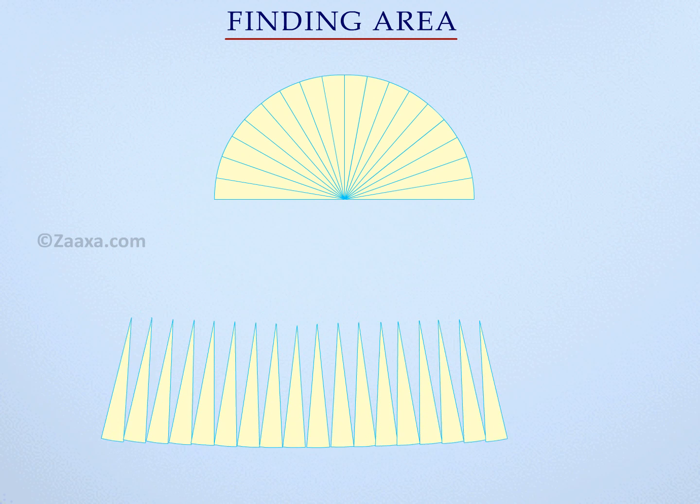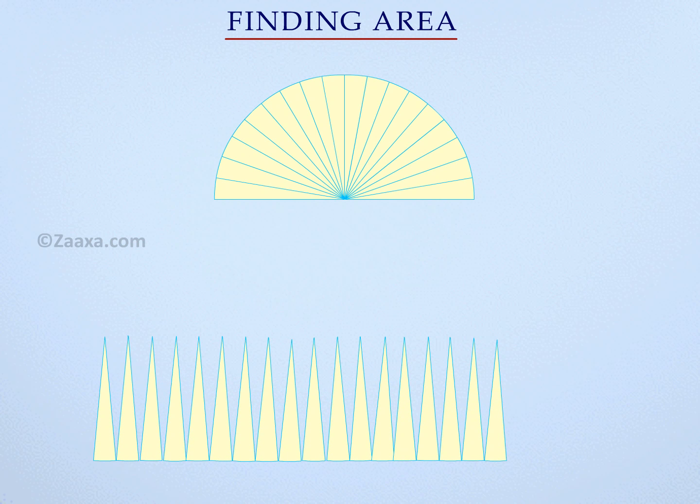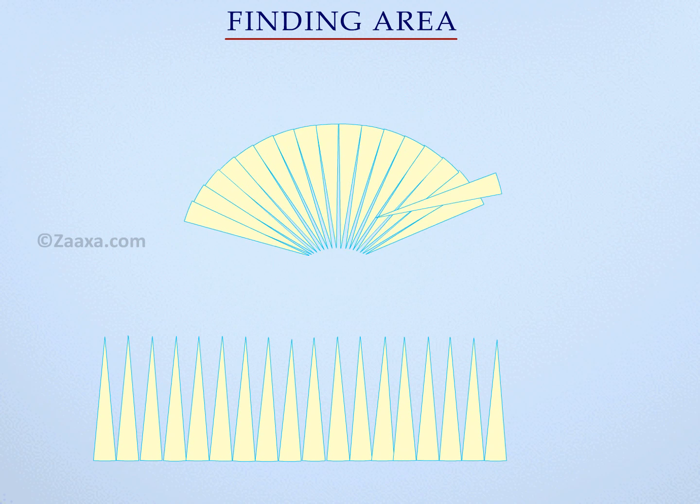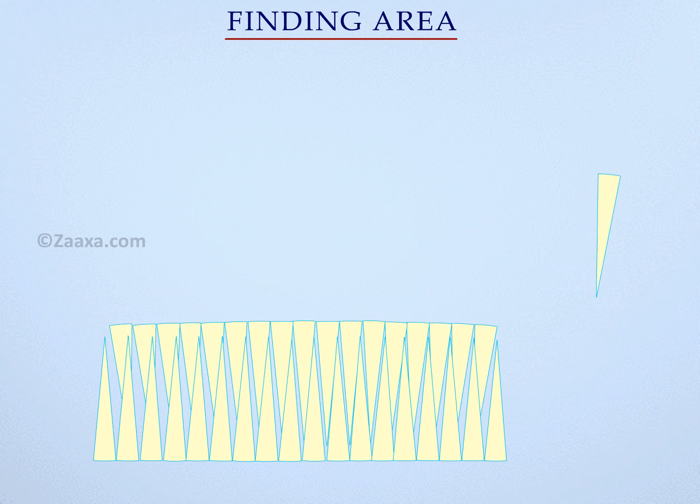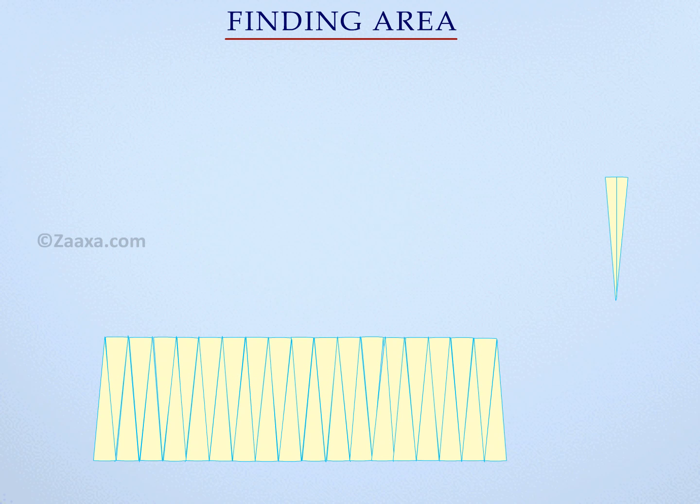We can now arrange the triangles like this. We cut the last triangle into two equal portions and place it in this way and form a rectangle. The length of this rectangle is equal to half the circumference of the circle, while its breadth is equal to the radius of the circle.